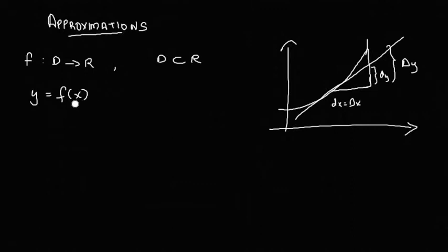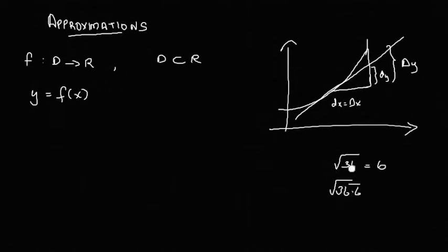If f of x has a small change, we are going to use an increment or decrement. For example, instead of using root 36 which gives us exactly 6, if we want root 36.6 we would otherwise need to solve by long division. So we will use the approximation method.